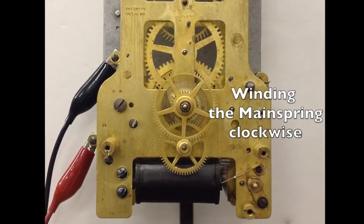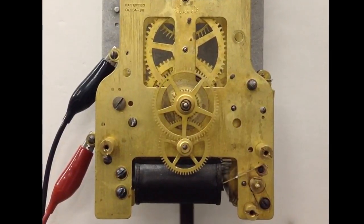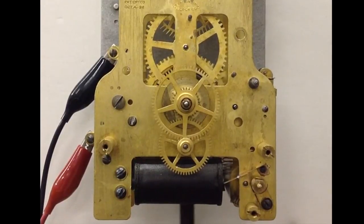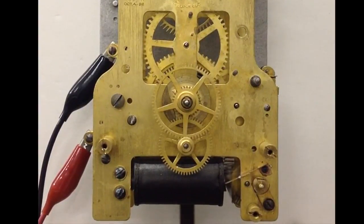Individual F movement winding times vary from 10 to 20 seconds. This movement takes 16 seconds to rewind.